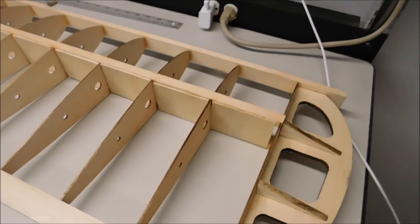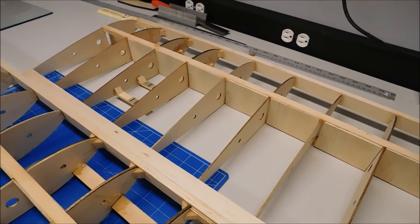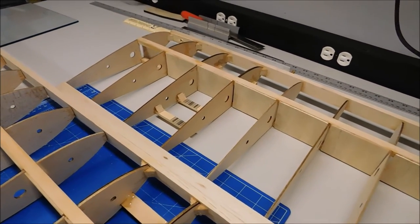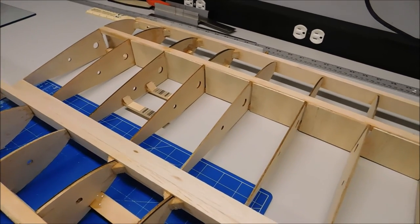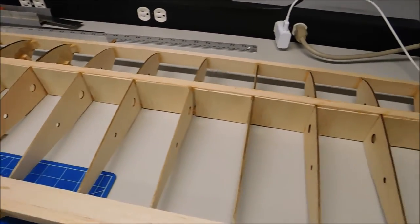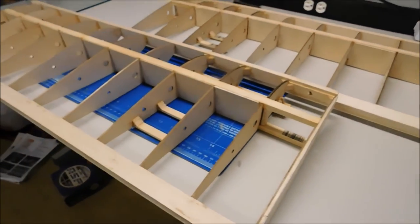So I still have to do all the front sheeting, leading edge sheeting, center sheeting. I want to make sure my servos are routed and all that good stuff is installed before I do all that. And then of course I've got final shaping to do. But the wings are coming along, slowly but surely.